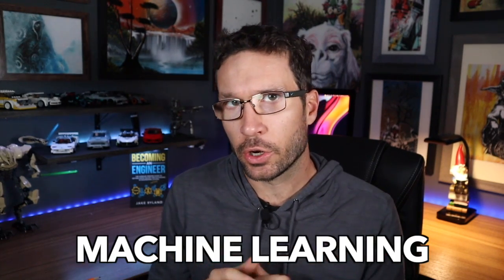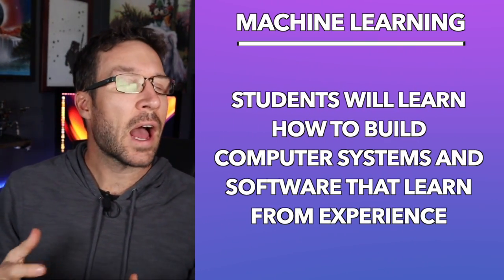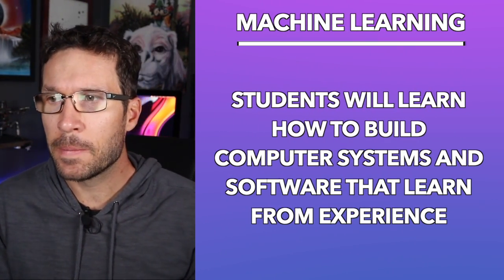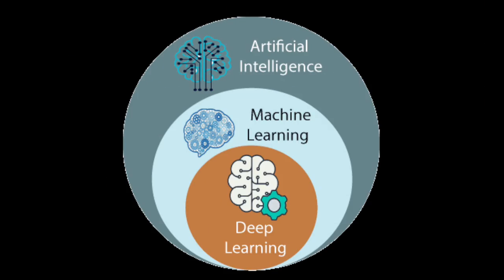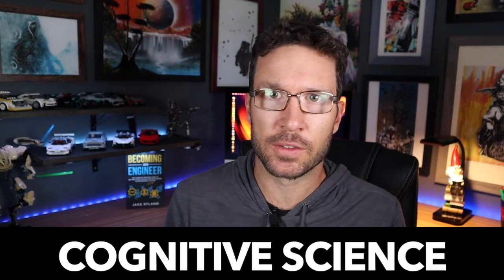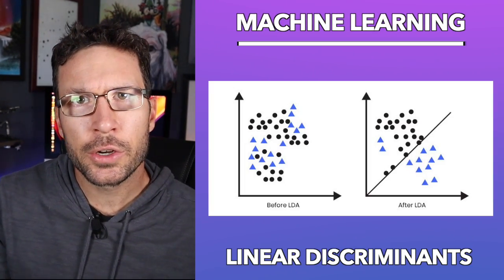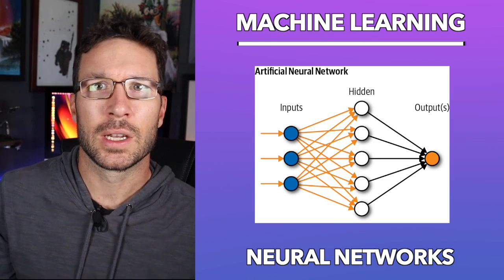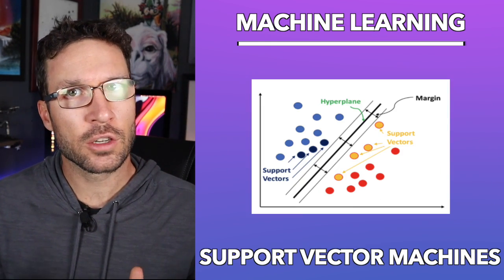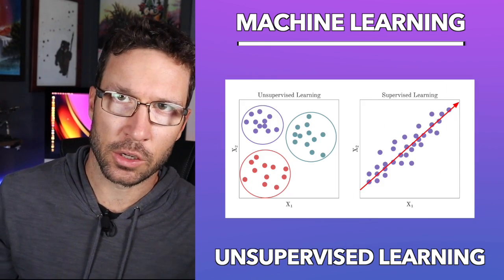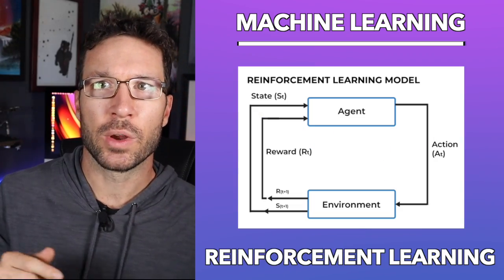Next up we have machine learning. In this course you're going to learn all about how to build computer systems and software that learn from experience. This course is closely related to artificial intelligence and a lot of what you learn intersects with statistics, cognitive science, information theory, optimization, and probability theory. Main topics include linear discriminants, neural networks, decision trees, support vector machines, unsupervised learning, and reinforcement learning.